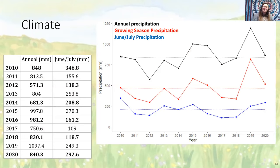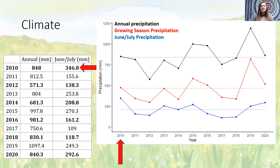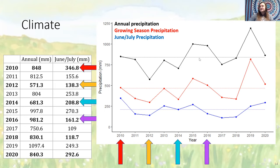Annual precipitation, as well as precipitation in the growing season and in June and July, was measured from a weather station on Konza. The mean annual precipitation at the site is 835 millimeters. Since 2010, there has been large variation in precipitation and temperature corresponding with different installation years. Sequence one was installed in an almost perfectly average precipitation year, and sequence two was installed in a drought year. Sequences three and four were installed in relatively dry and relatively wet years, respectively.